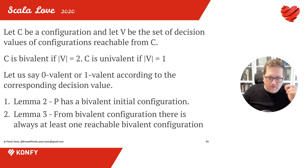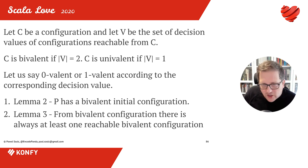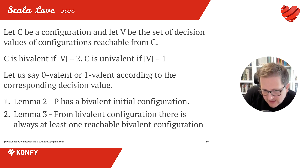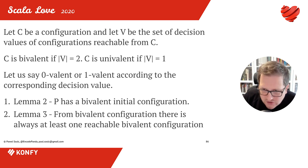If we can prove those two things, we know we cannot reach a consensus — we always start with at least one bivalent initial configuration, and from any bivalent configuration there's always another bivalent configuration reachable. Lemma two says P has at least one bivalent initial configuration. An initial configuration is a set of all initial states where the message buffer is empty. All initial configurations differ only on one thing: the input register X — the starting value that starts execution of each process.